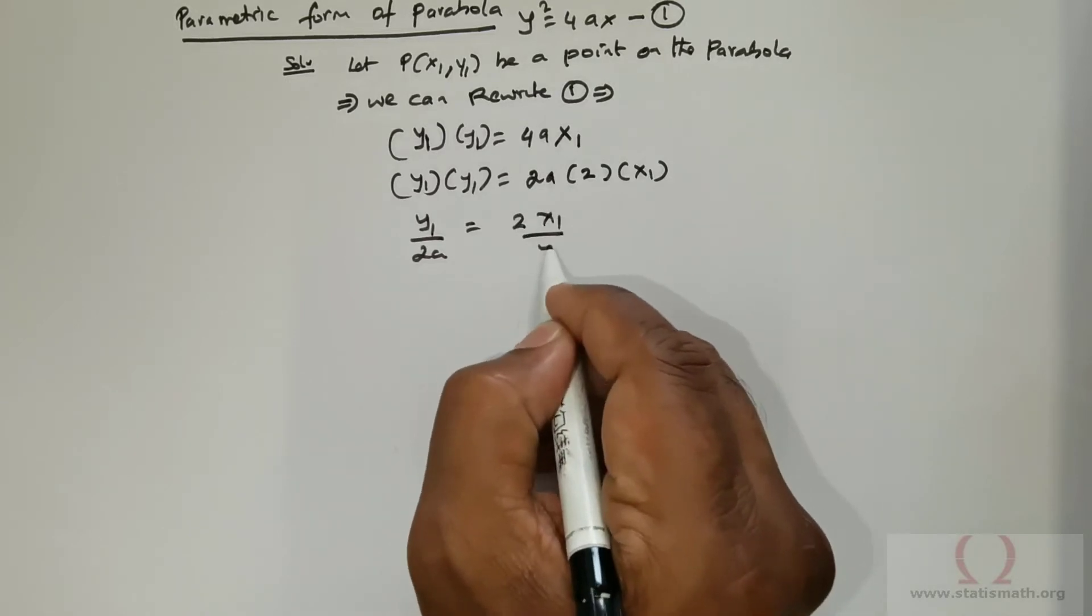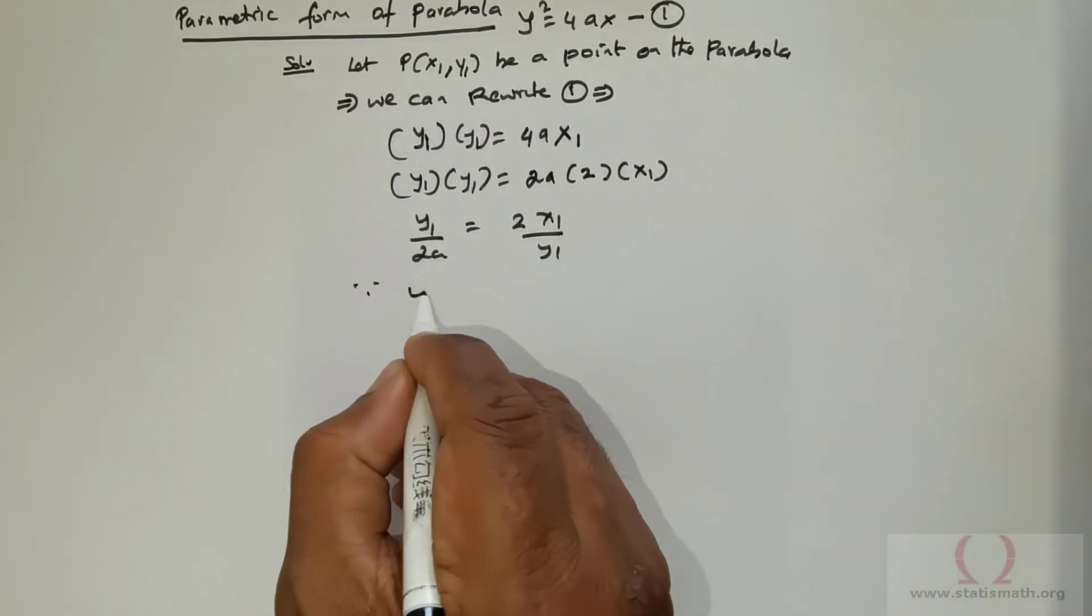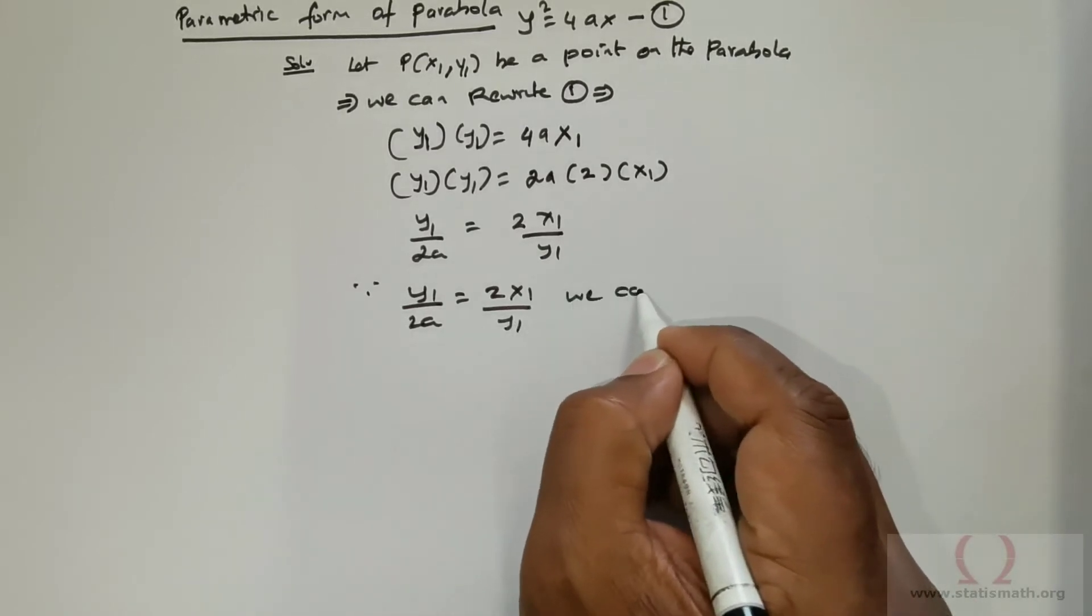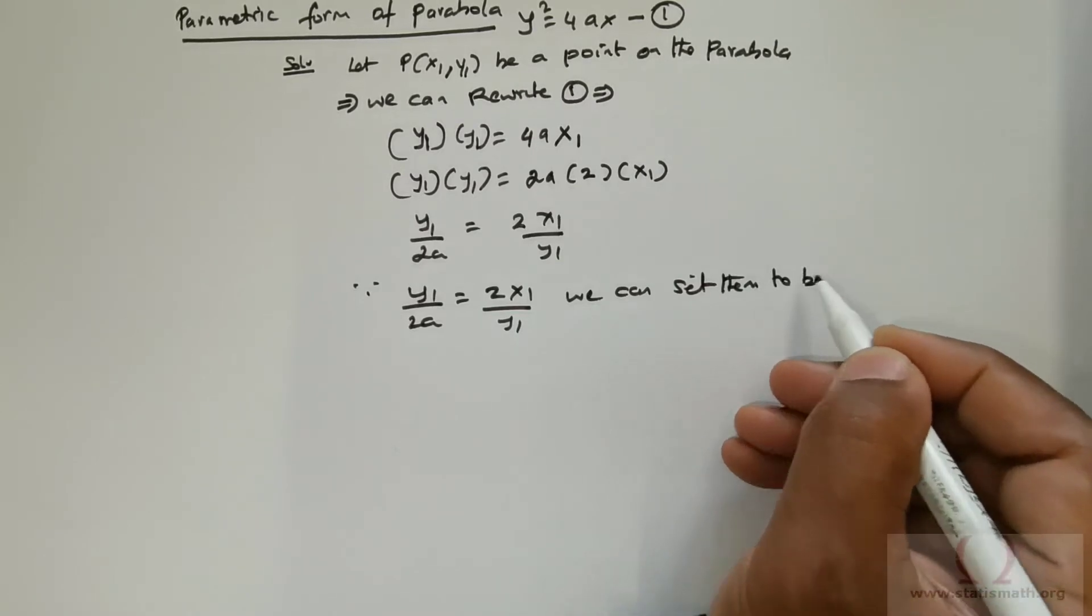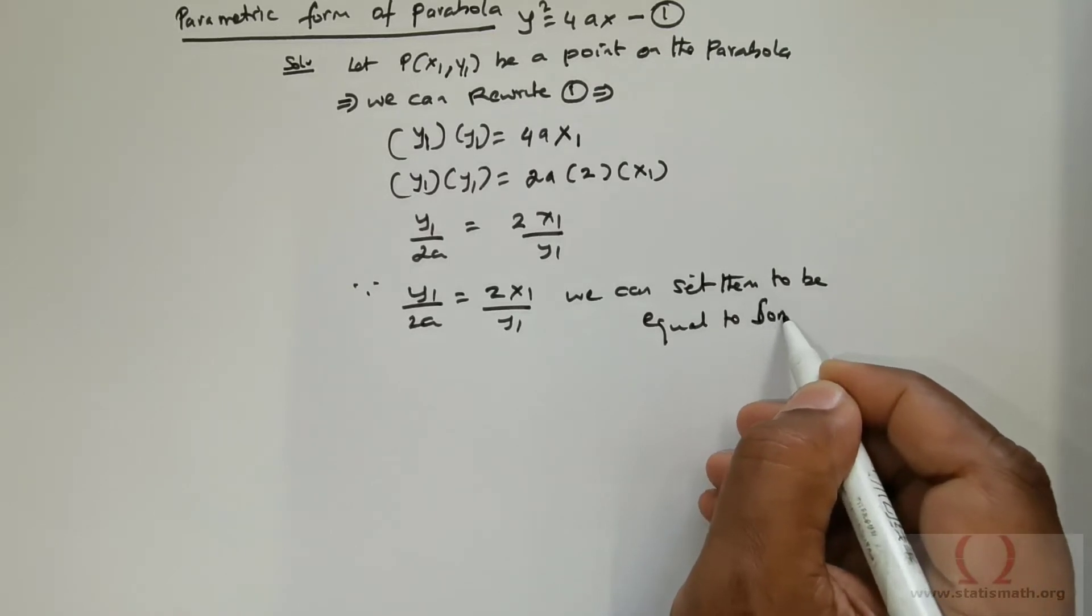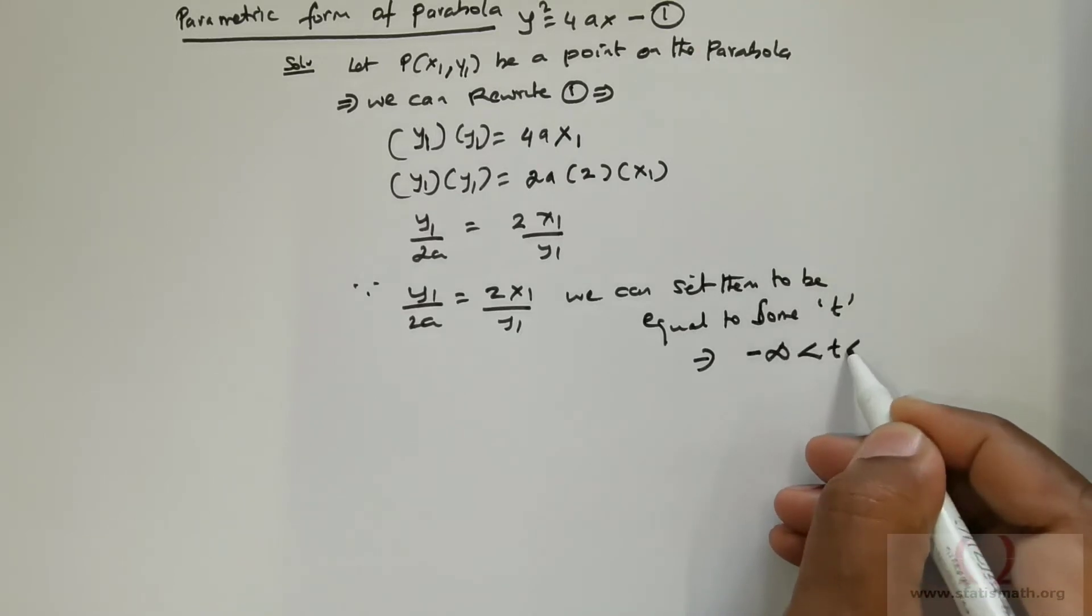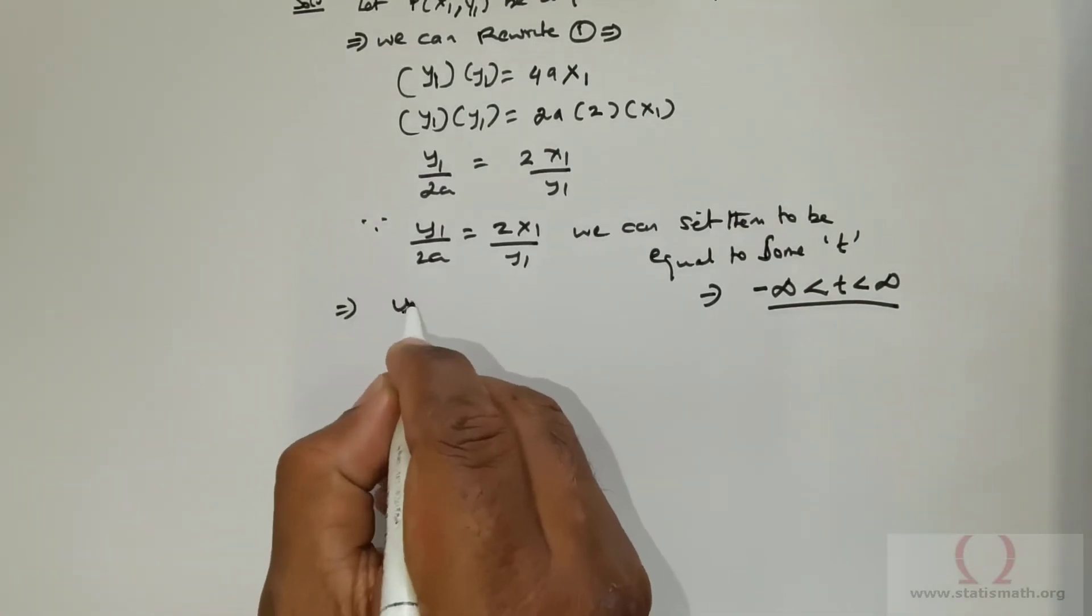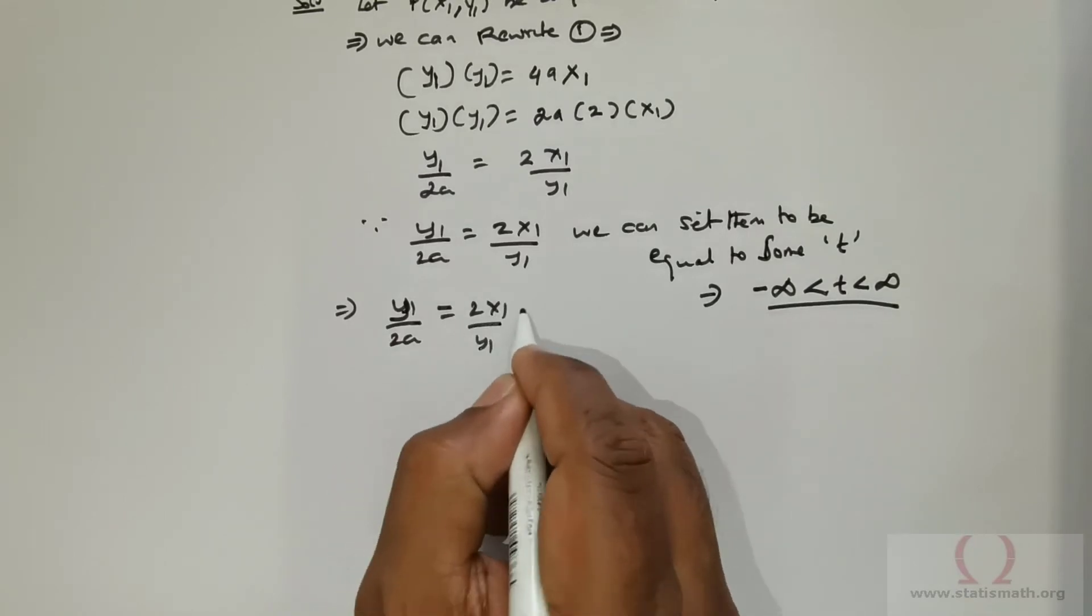This is what we have got. Since y₁/2a equals 2x₁/y₁, we can set them equal to some parameter t, where t is between negative infinity and positive infinity. This means y₁/2a = 2x₁/y₁ = t.